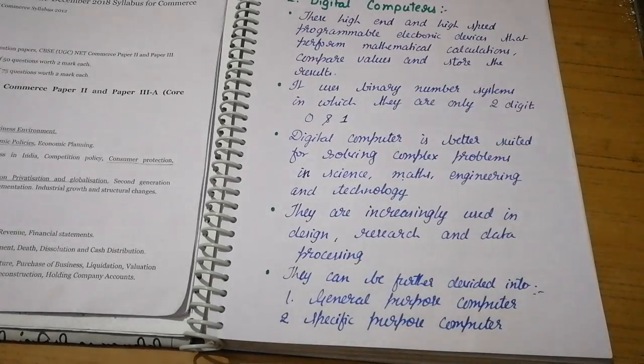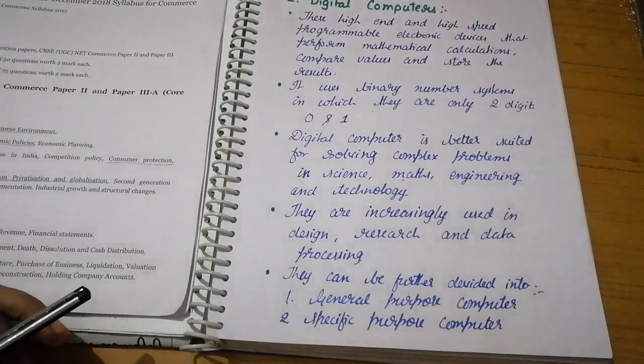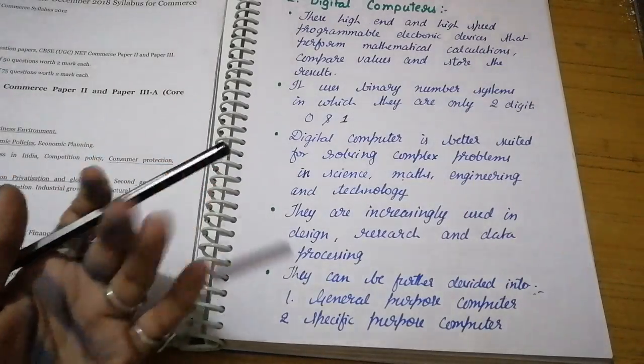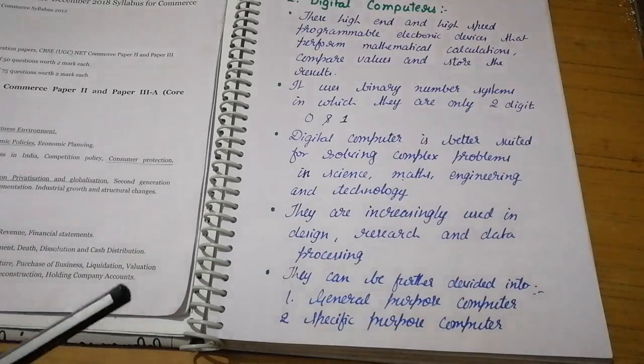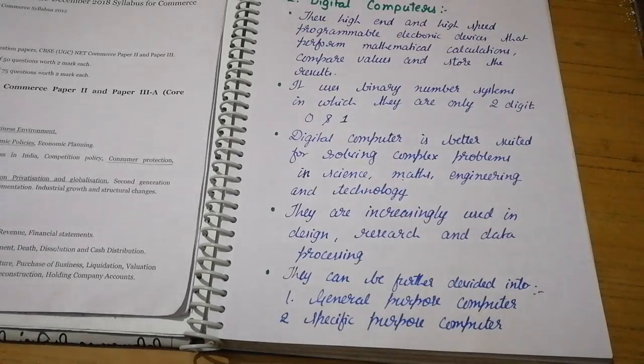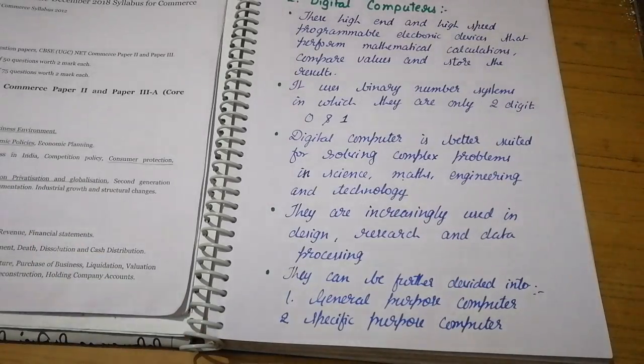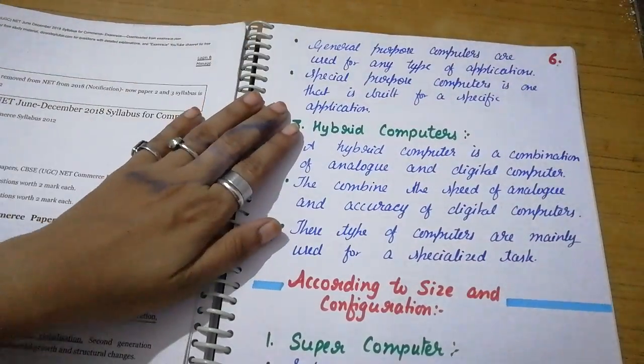Digital computers use binary number system where there are only two digits: zero and one. They are better suited for solving complex problems in science, math, engineering, and technology. They are increasingly used in design, research, and data processing. Digital computers can be further divided into general purpose computers and specific purpose computers.